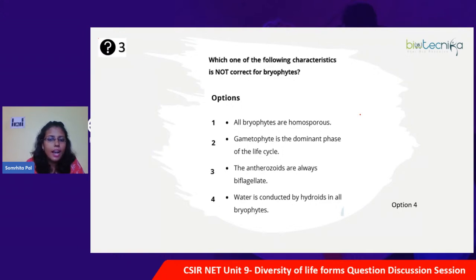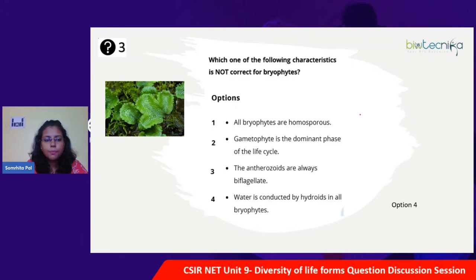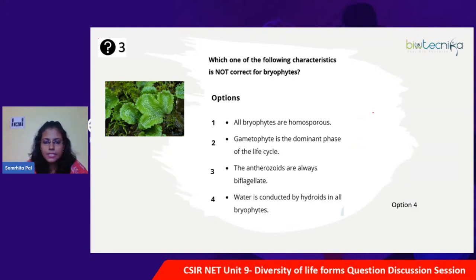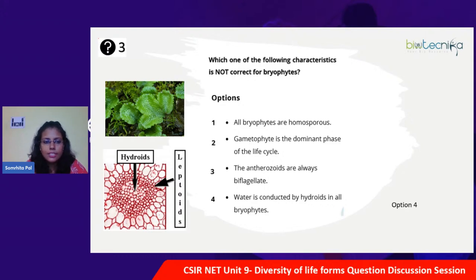The correct answer is option 4: 'Water is conducted by hydroids in all bryophytes.' Basically, this hydroid mode is found in some mosses — it is a type of water-conducting cell that occurs in mosses and some members of the Polytrichian family. These inner stem cells become non-living, usually long, curl-less, and thin-walled with small diameters, but without living protoplasts — so they are non-living and help in water conduction. The surrounding leptoids are the living ones with protoplasts.